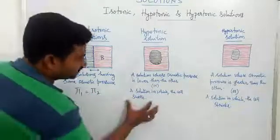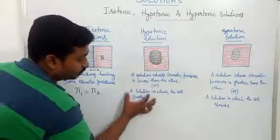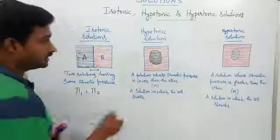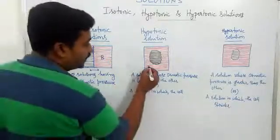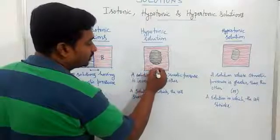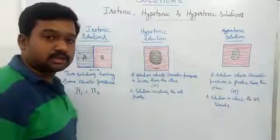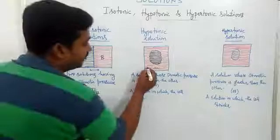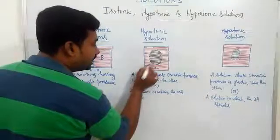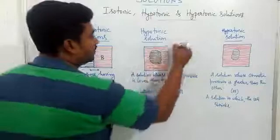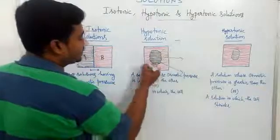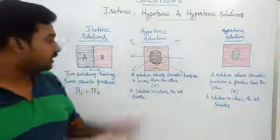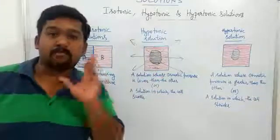There is an important detail about hypotonic solution: it is a solution in which the cell swells. The cell swells when the external solution has lower osmotic pressure and the internal solution — whatever is present inside the cell — has higher concentration. In that case, movement takes place from outside to inside the cell, and therefore the cell enlarges, or we say the cell swells. So when there is expansion, the external solution is called the hypotonic solution.